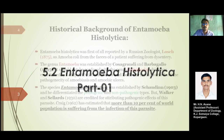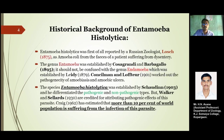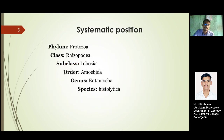In Part 1 of Entamoeba histolytica, we studied its historical background with its discovery. Entamoeba histolytica is found in two structures: one is the pathogenic structure and the second is the non-pathogenic type. More than 10% of the world population is suffering from infection of this parasite. We saw its systematic position: phylum Protozoa, class Rhizopodea, subclass Lobosa, order Amoeba, genus Entamoeba, species varies.